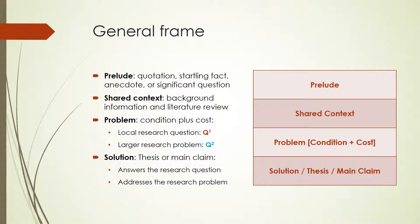Third, introduce the problem as something not well known. Problems have two parts, the condition and the cost — that is, the cause and the human effect. In research writing, the problem's two parts come as two questions. First, the local research question, usually focused on a specific work of literature. And second, the larger research problem, which may take several forms, but often it is an interpretive issue or a debated issue that one must traverse to answer the research question sufficiently and significantly.